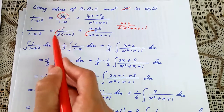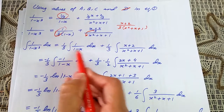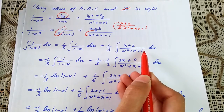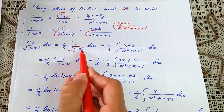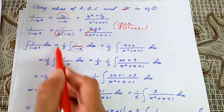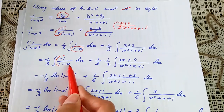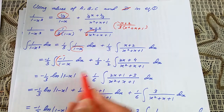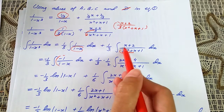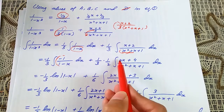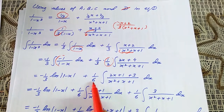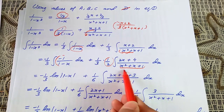Now integrating both sides, split into two fractions. The 1/3 is a constant taken outside, giving the integral of 1/(1 - x) dx. We know the derivative of (1 - x) is -1, so write a minus sign: the integral of -1/(1 - x) gives ln|1 - x|. For the second part, multiply the numerator by 2 and divide by 2 to get 2x + 4, making 1/(2·3) = 1/6.